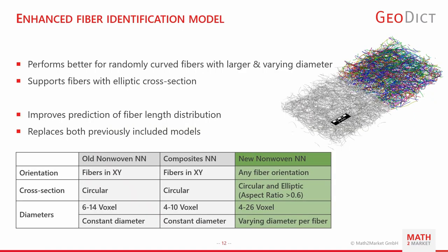Next we have an enhanced fiber identification model, now shipped with FiberFind AI, which replaces the two previously shipped models. As shown in the table, this model is anisotropic — it works for any fiber orientation, whereas the previous models had a preference for fibers oriented in the XY plane. It also works for elliptical cross sections, a larger diameter range with fibers up to 26 voxels in diameter, and it does not require that the diameter be constant along the fiber.